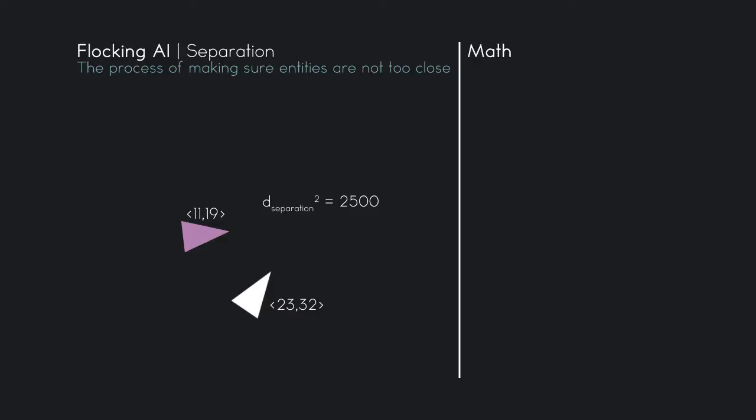Let's calculate the distance squared between the two entities. We take 23 minus 11 and square that for the x component, then take 32 minus 19 and square that for the y component, and add those two values together. That gives us 313. Since 313 is less than 2500, the entities are too close to each other.